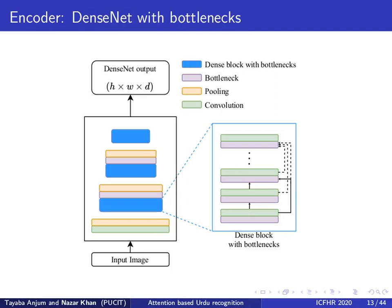Our encoder is made up of three dense blocks at different scales. Each dense block employs bottlenecks — that is, 1x1 convolutions — to limit the number of connections. The most important part is the output, which is a volume of size h by w by d. The DenseNet can be replaced by any convolutional network that produces a similar output volume.